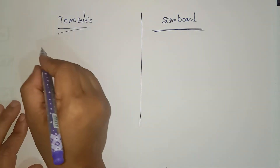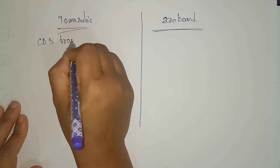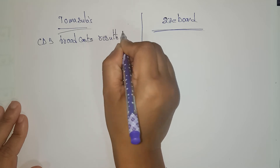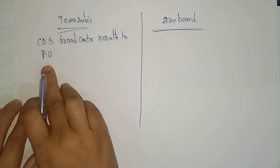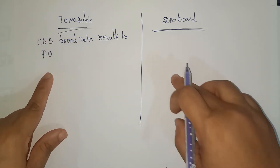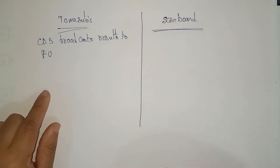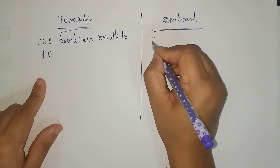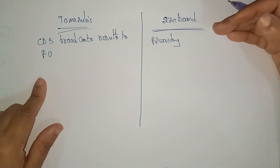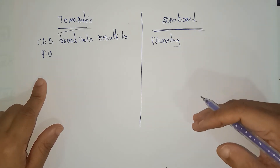In Tomasulo's algorithm, a common data bus (CDB) is used to broadcast results to all functional units, sending results back so that waiting units can use the data. In scoreboarding, a forwarding technique is used: whenever the previous instruction completes its read operands stage, the next instruction takes those operands.